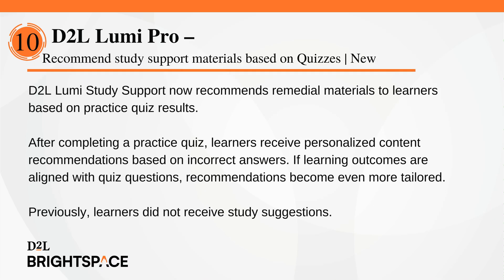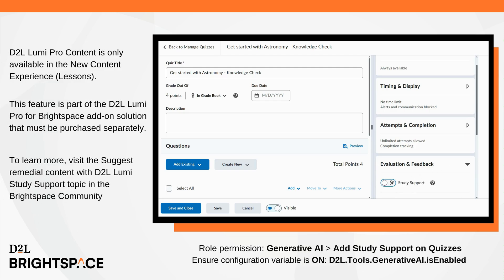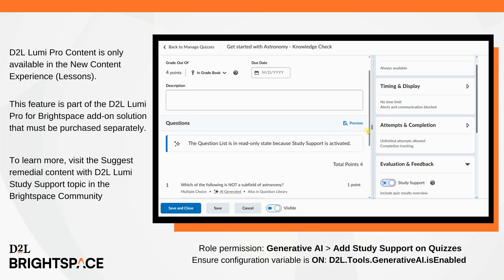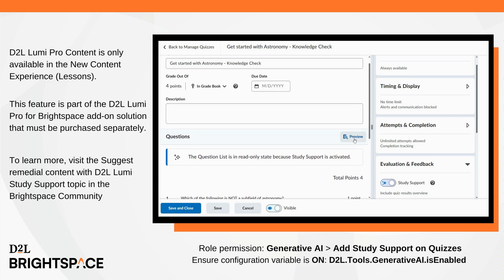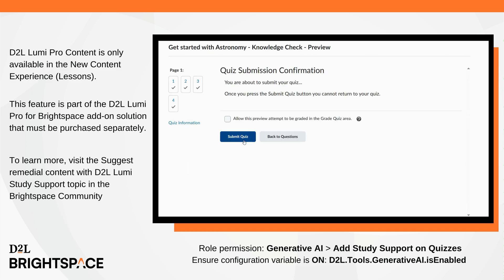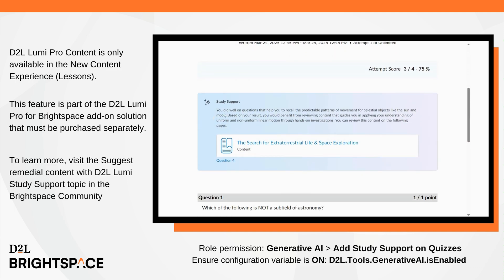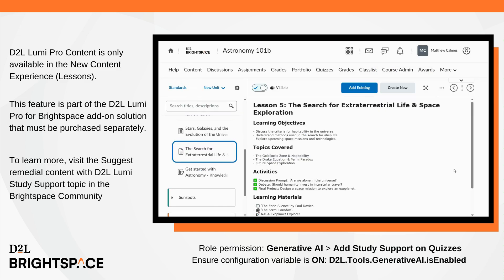D2L Lumi Study Support now recommends remedial materials to learners based on practice quiz results. This feature provides instant feedback, helping learners improve comprehension and retention. After completing a practice quiz, learners receive personalized content recommendations based on incorrect answers. If learning outcomes are aligned with quiz questions, recommendations become even more tailored. Previously, learners did not receive study suggestions. This feature is part of the D2L Lumi Pro for Brightspace add-on solution that must be purchased separately. To learn more, visit the Suggest Remedial Content with D2L Lumi Study Support topic in Brightspace Community. To enable, administrators must assign the Add Study Support on Quizzes role permission and ensure the D2L.tools.generativeai.isEnabled configuration variable is set to on.